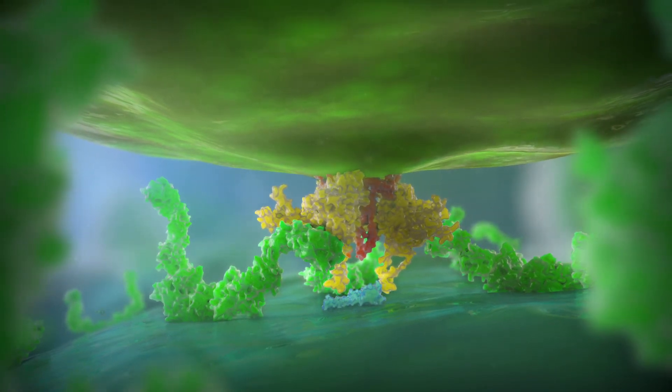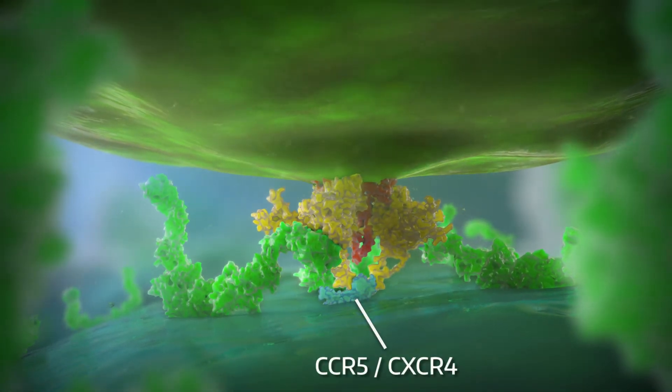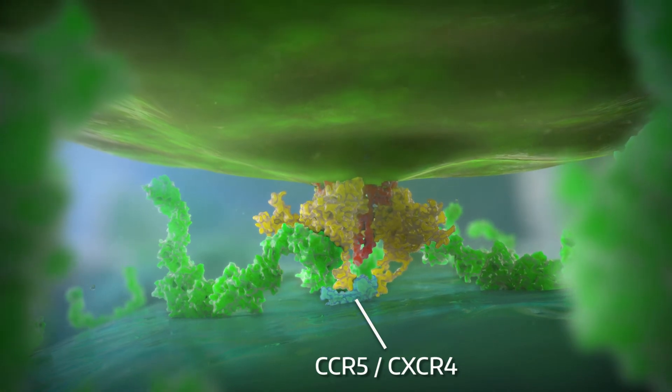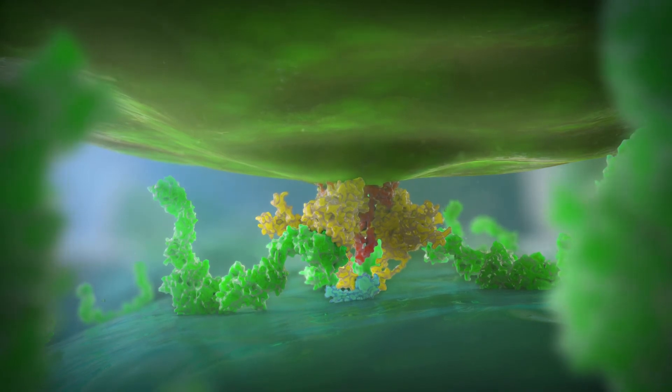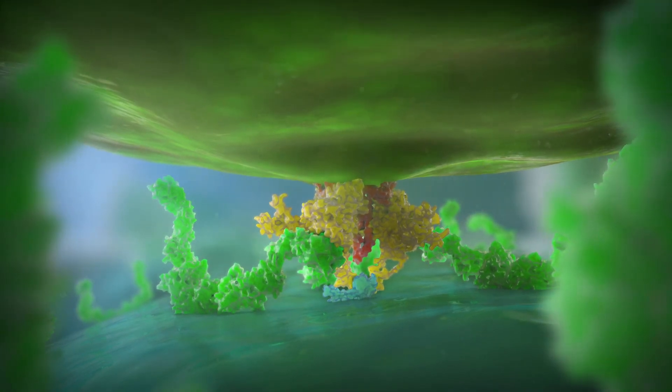This second active site then binds to one of two co-receptors on the T cell surface, CCR5 or CXCR4. The required co-receptor depends on the genetic strain of HIV.